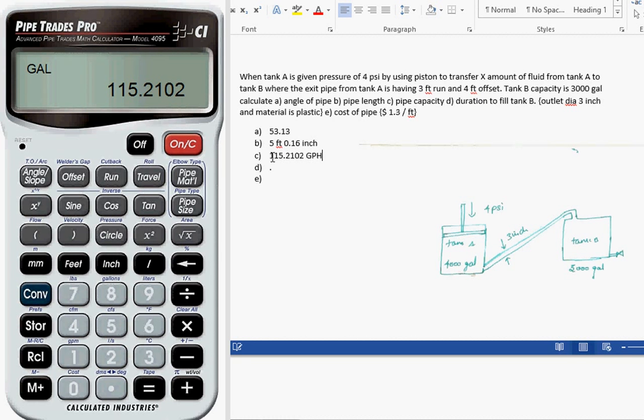115.2102 GPH per hour. For the 3,000 gallon tank B, let me divide 3,000 by this value per hour. This is the filling rate.